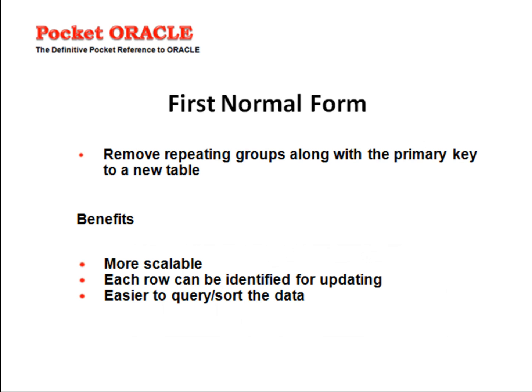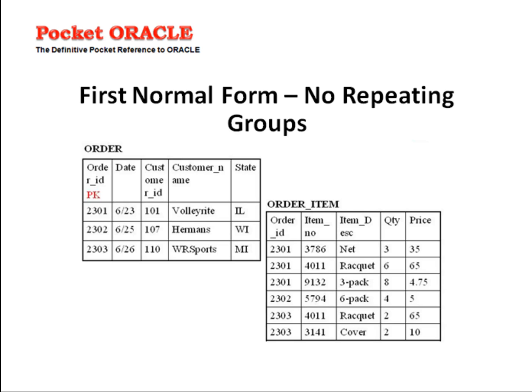The first normal form. In first normal form, we remove repeating groups along with the primary key to a new table. The benefits are increased scalability, each row can be identified for updating, and the easiness to query and sort the data. First normal form means no repeating groups. Here we have split our order table into orders and order item by identifying a primary key for both of them.